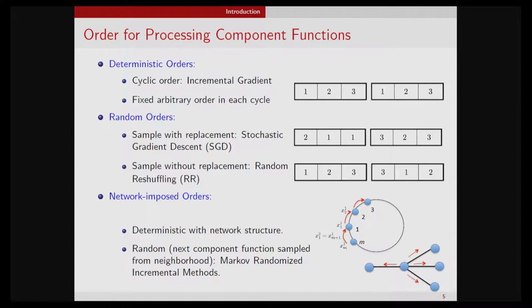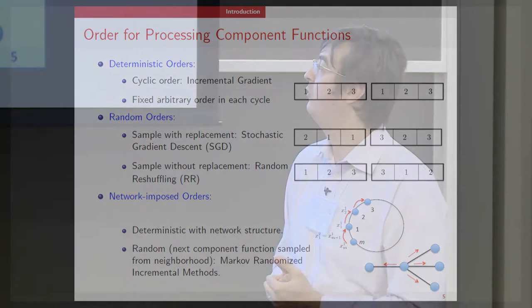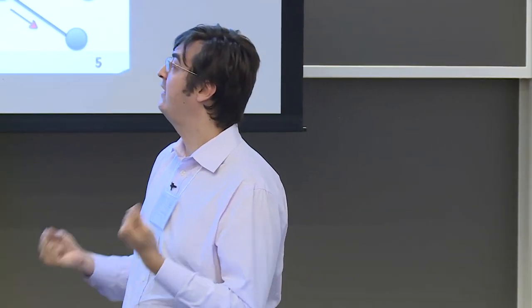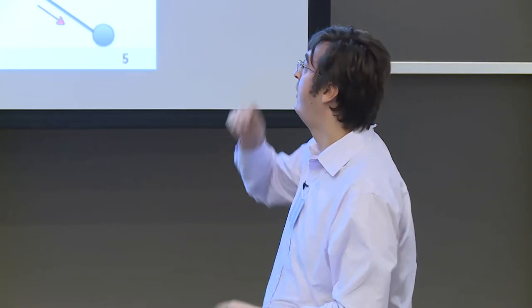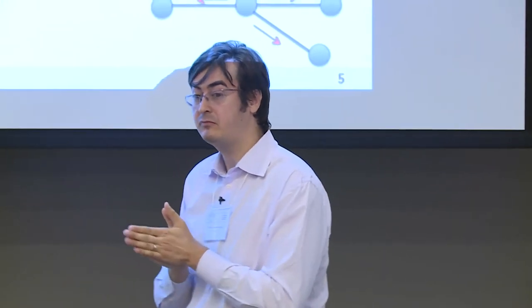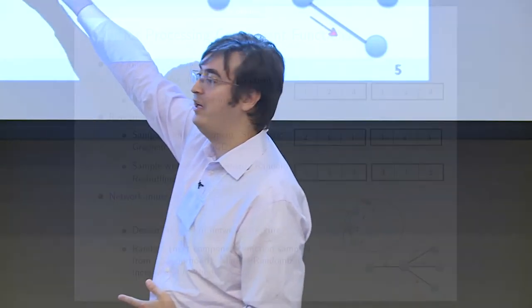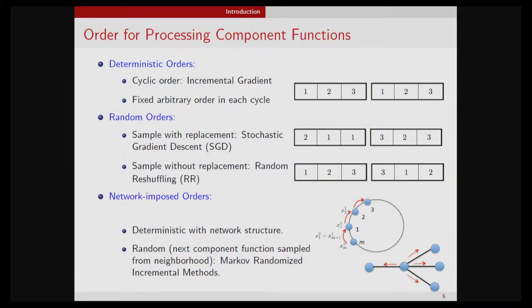The big question is: what is the right thing to do? Should we use deterministic methods or randomize? In its generality, no one really knows. Even for very simple first-order algorithms and simple quadratic functions, we don't know which one to choose for a given problem. Stochastic gradient descent is well studied going back to the fifties, but the random reshuffling variant is not that well understood. Today I'll be talking about that direction.